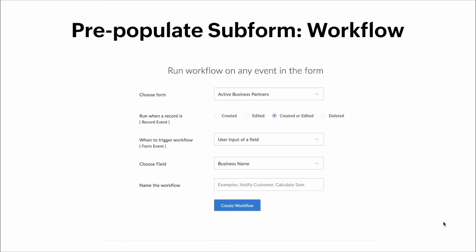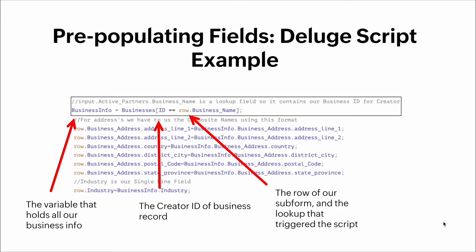Here's how we create the workflow: we choose the form, select when we want it to run — in this case when a record is created or edited — and trigger it on user input of a field change, where the field name is business name. Here's the Deluge script: we select a variable called business_info to hold all our business information. The creator ID of the business record will be the ID, and then the row of our subform. We use the word 'row' before the field to let Deluge know we're referring to a specific row within a subform.